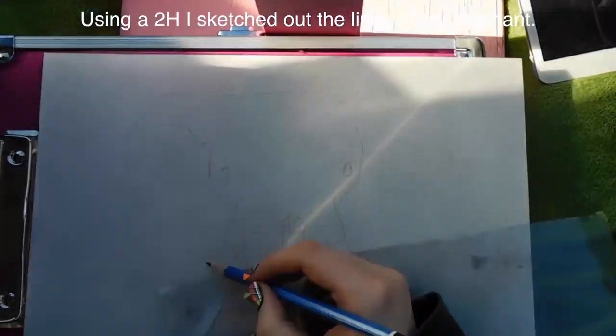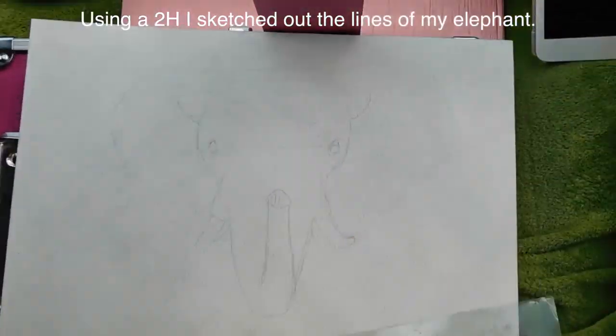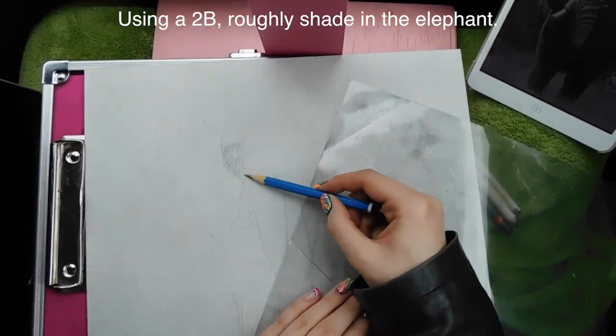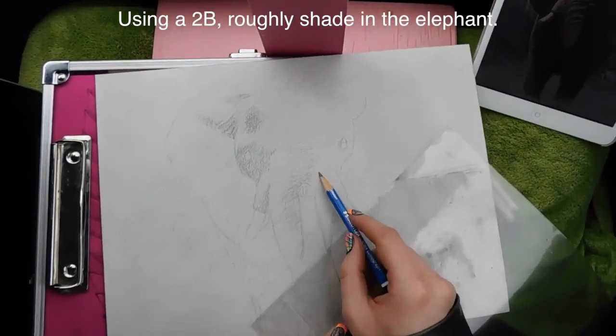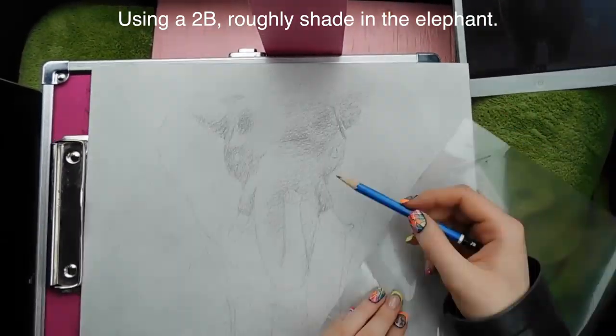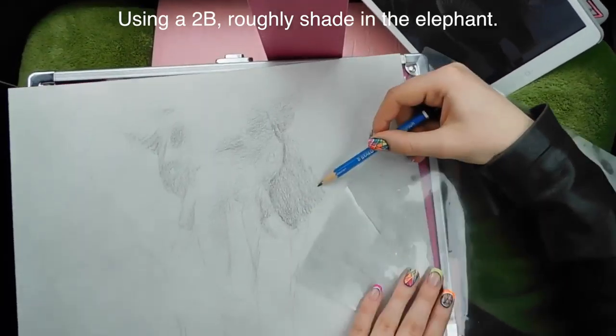Using a 2H pencil, I'm going to sketch out my elephant. One thing I do want to say about that tissue that I use to blend out the lines is that you want to make sure it's a cheap one, because any of them that are more expensive tend to have aloe or lotion to prevent your nose from getting raw.